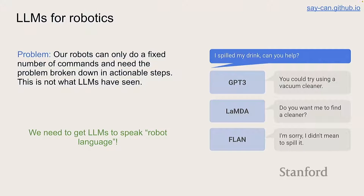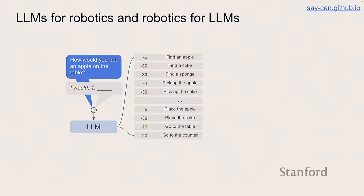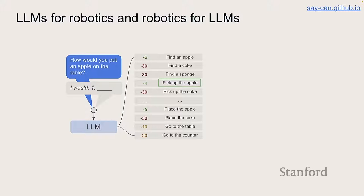We want the language model to speak in a way that robots can actually execute given their embodiment. The first algorithm is called SayCan. Instead of letting the language model just generate the max probability next token, we fix the ways it can respond — a scoring mode where we see how likely it is to respond in each way. If I said 'put the apple on the table,' these are the things you can do: find an apple, find a sponge, pick up an apple. You can see 'pick up the apple' has really high probability, which makes sense.